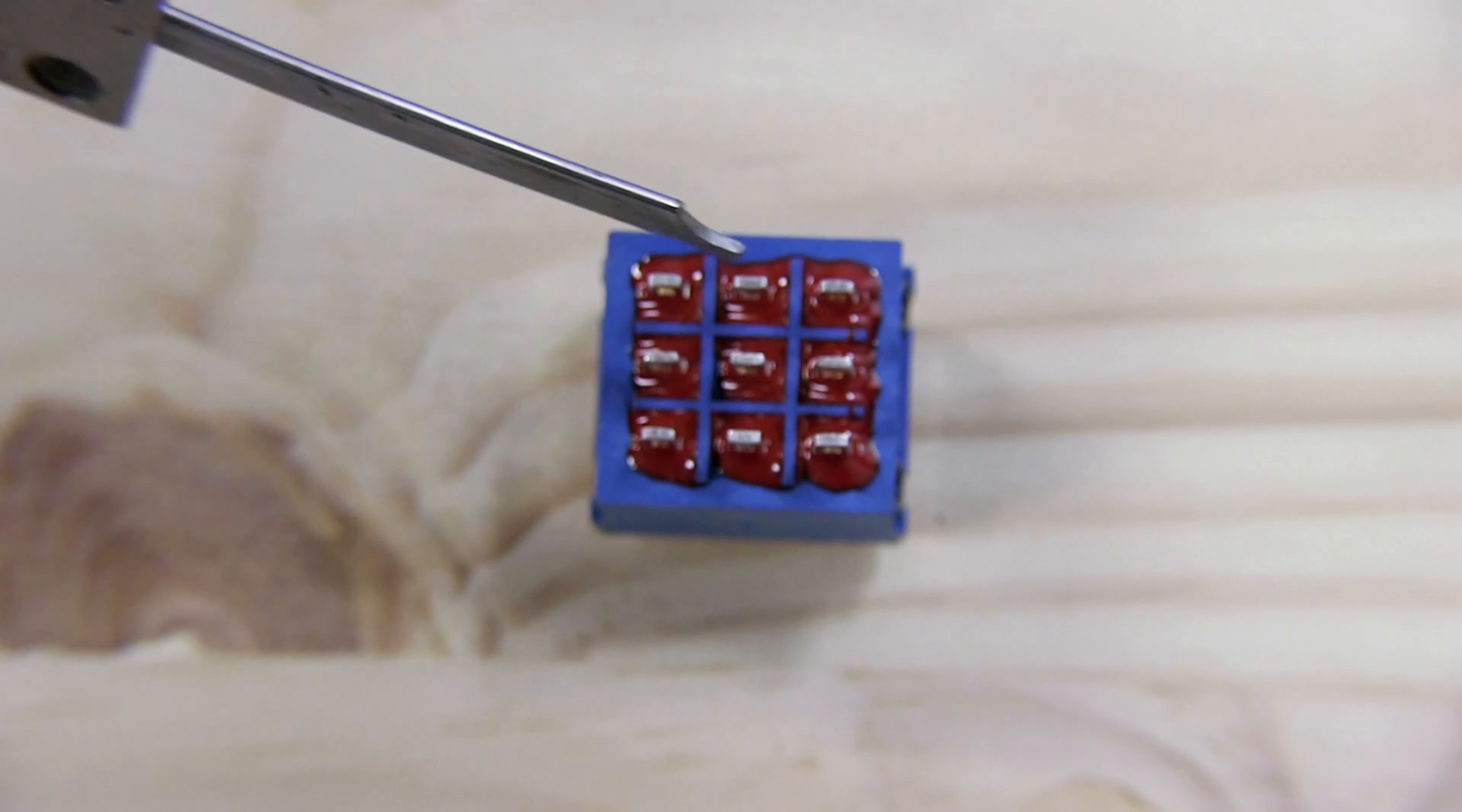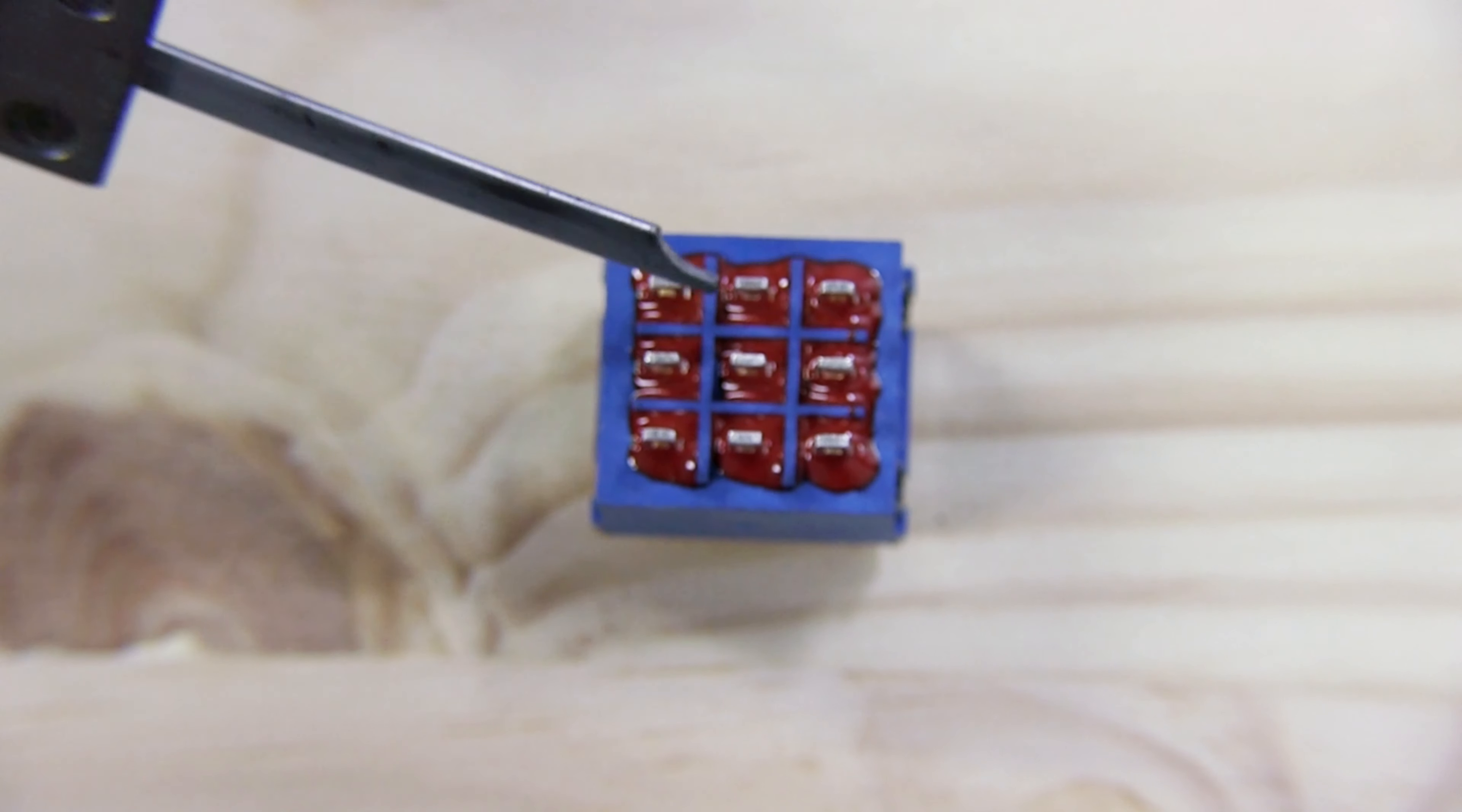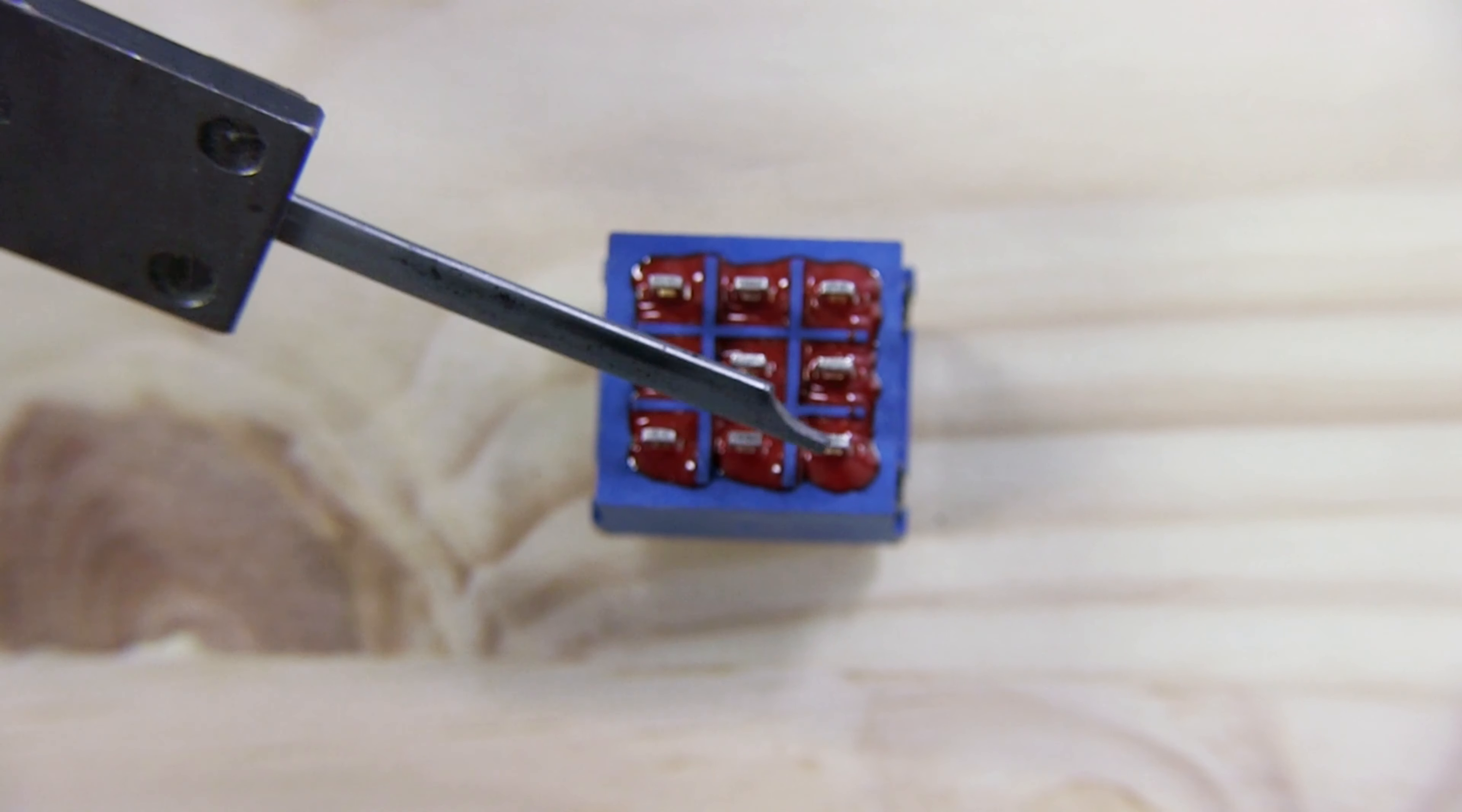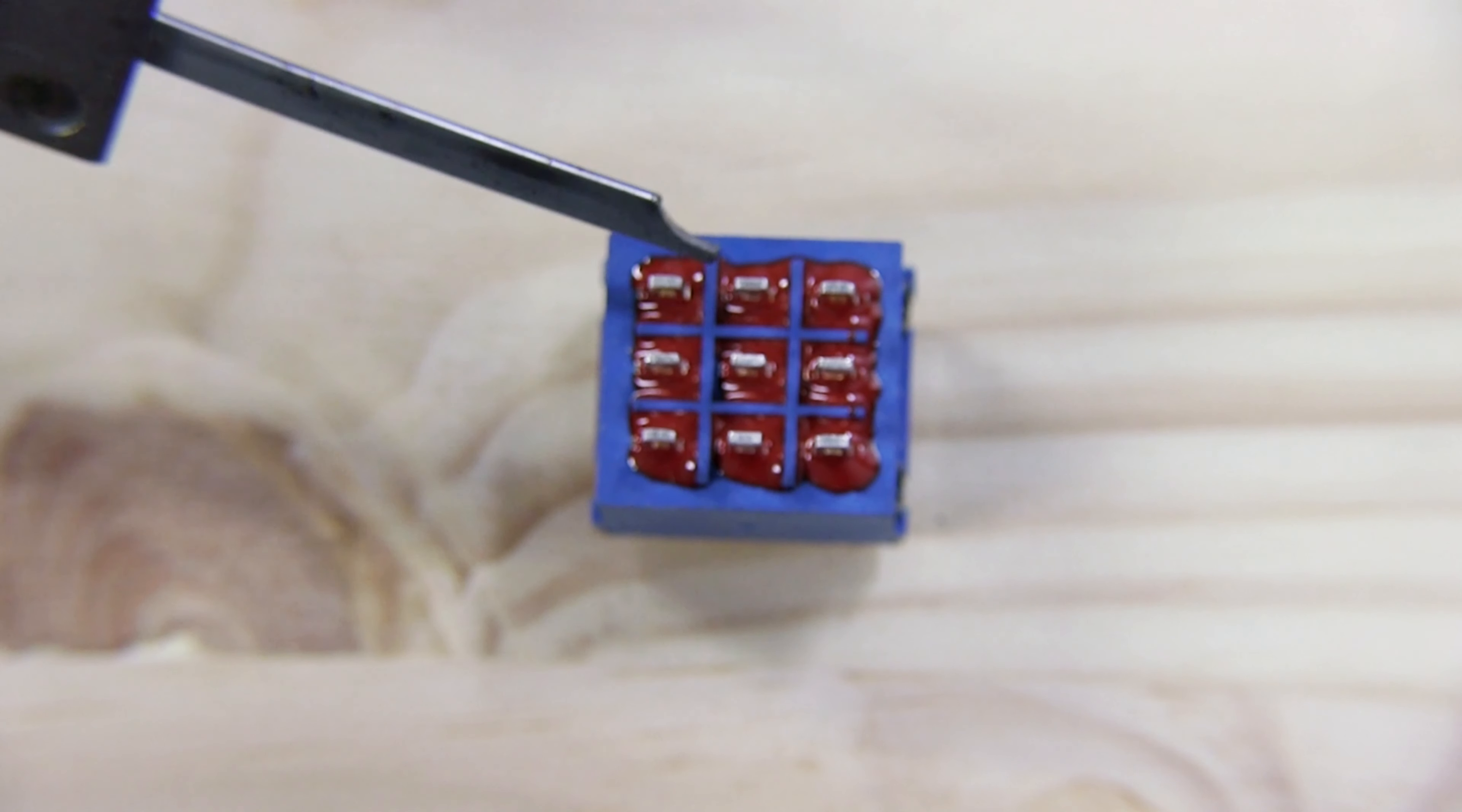So you basically have three rows. One middle row and the upper and lower row. Now if you look at these connections you can see that they are flat so they're smaller on this side and longer on this side. This is the orientation you want to switch.